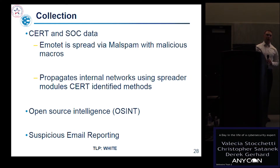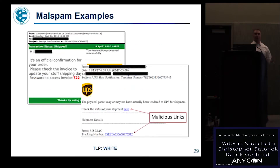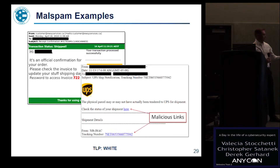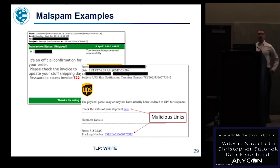We also have suspicious email reporting — members report emails into our inboxes and we analyze them. Looking at two examples of a malicious Emotet email: they've put a UPS logo on it for branding, included our name, and at the bottom it says it's from the MS-ISAC. This is sophisticated — they know their target and what's going to be relevant to them. These are crafted spear-phishing emails sent specifically to targets.